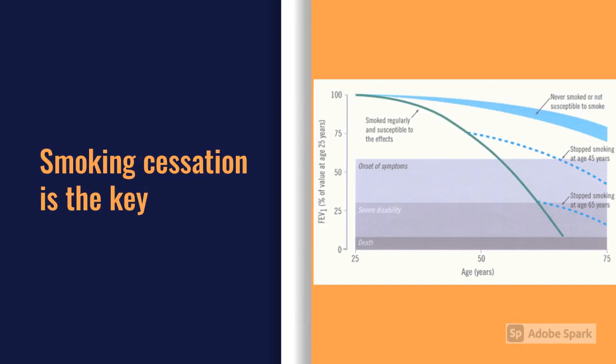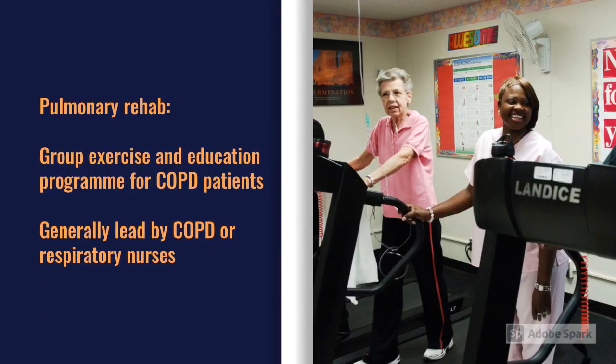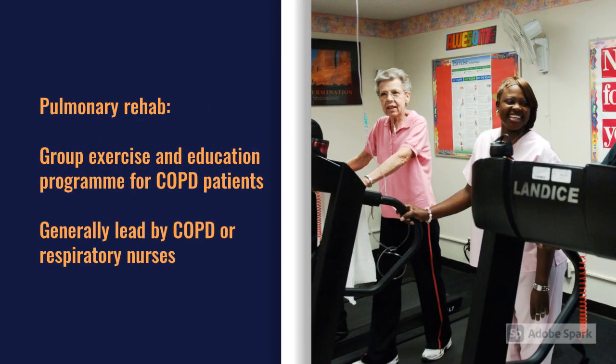Education and informing the patient is obviously important. Smoking cessation is the only real thing that's going to slow the progression — COPD is an aggressive disease, but stopping smoking does slow that downward curve. There's also pulmonary rehabilitation, which is essentially a combined exercise and education service normally run by COPD or respiratory nurses in the community.